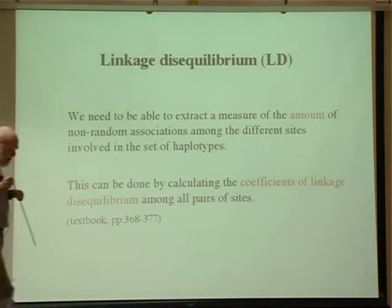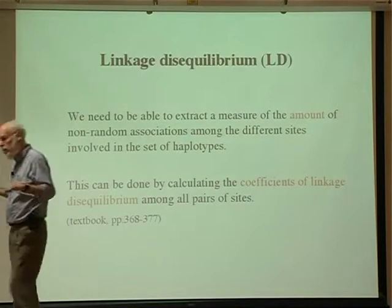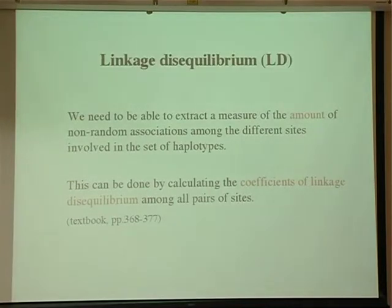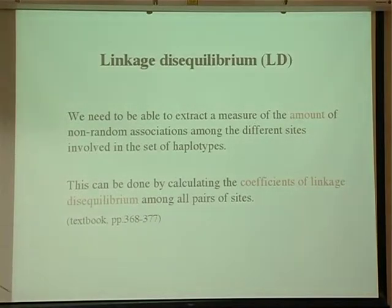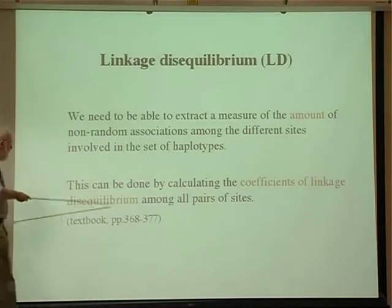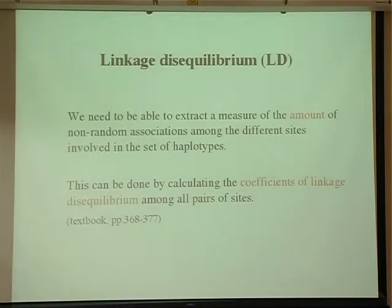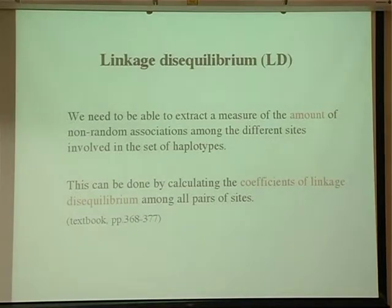If you read human genetics literature now, it's full of papers where people talk about LD without necessarily knowing what it is, in the case of medical doctors. LD is a measure of the amount of non-random associations among the different sites. What we get is what's called the coefficient of linkage disequilibrium. It's not a very good term because it really doesn't have much to do with equilibrium, and it's only a little to do with linkage as well, but it's got stuck in the literature.